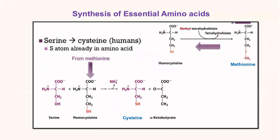In human beings, there is a slight change in how cysteine is formed. It is kind of a reverse reaction: from methionine, homocysteine is first formed, and this homocysteine — formed from methionine — in the presence of serine gets converted to cysteine. So this reverse reaction is how cysteine is formed in human beings.